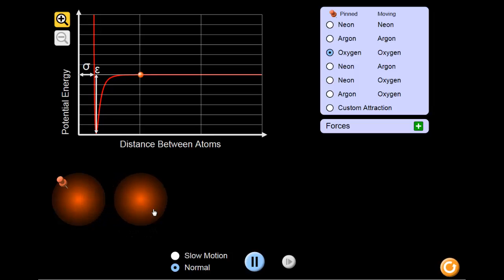If we pull the two atoms away from each other and release them, you can see that they attract together, but instead of bouncing off each other, they stay close together.